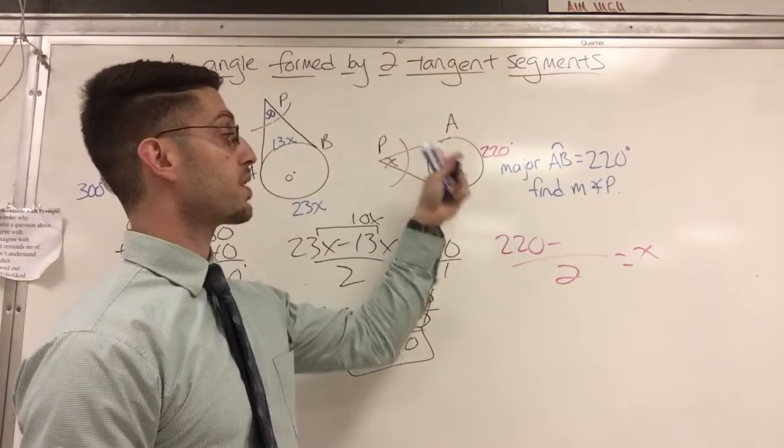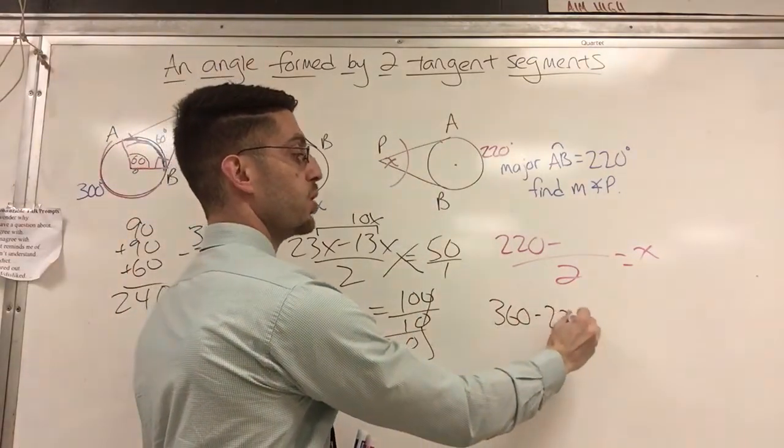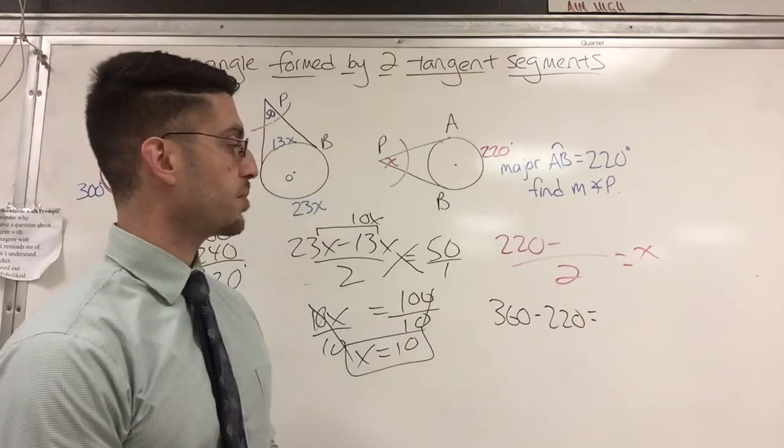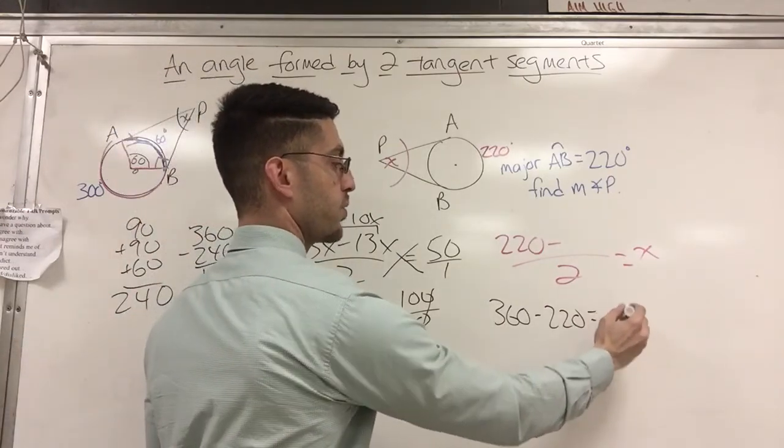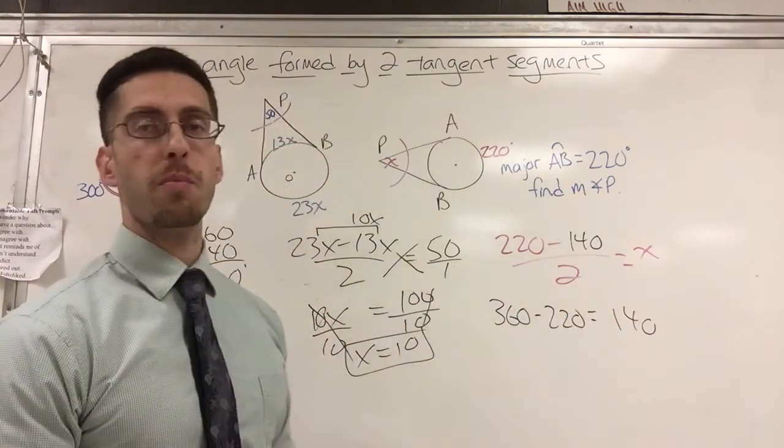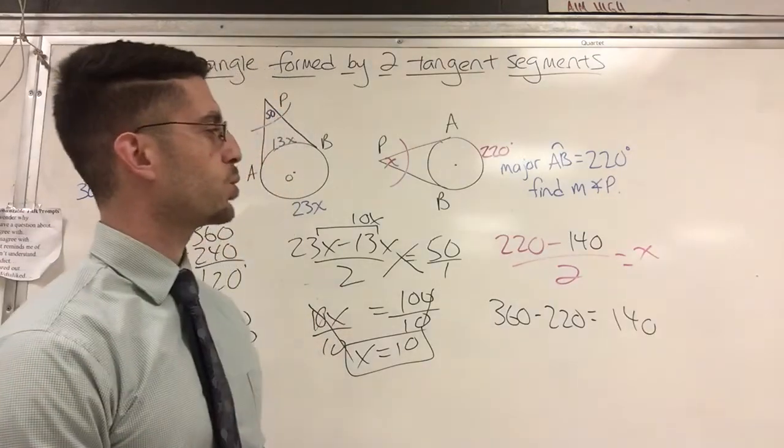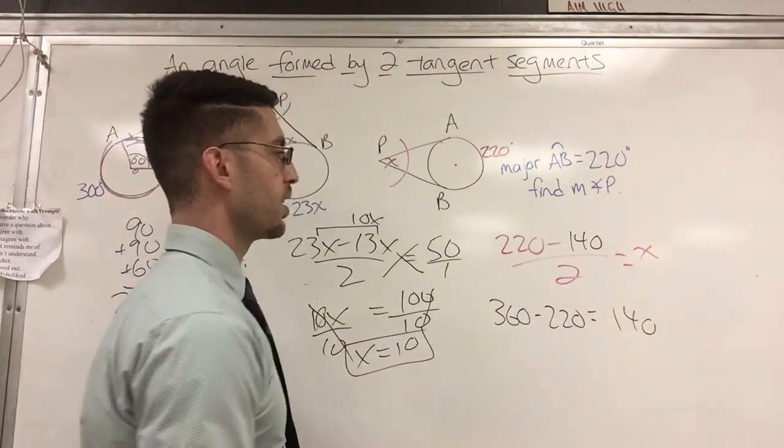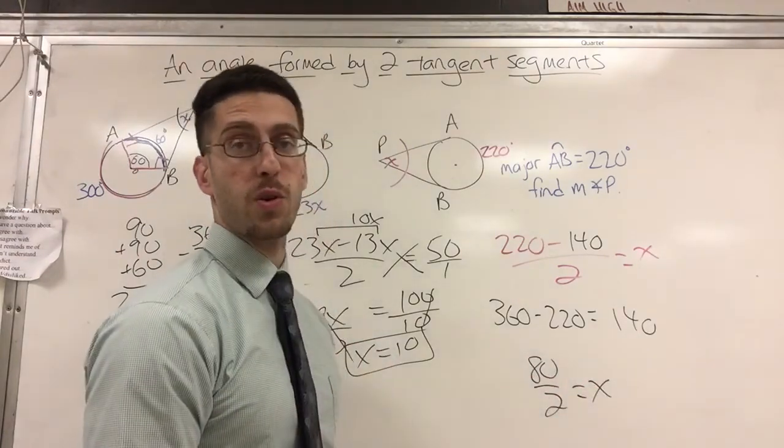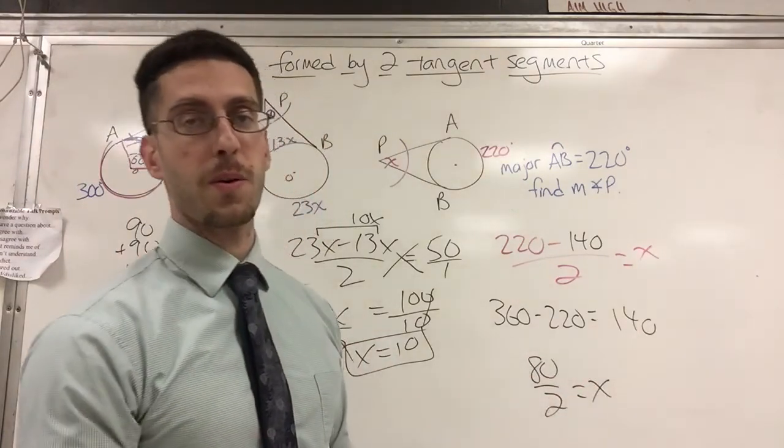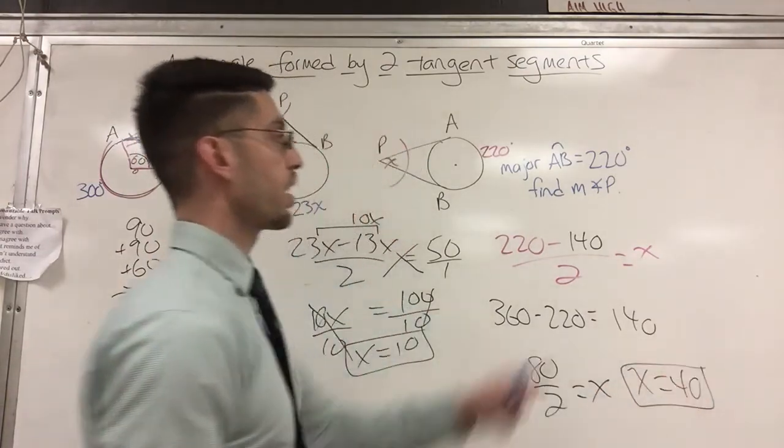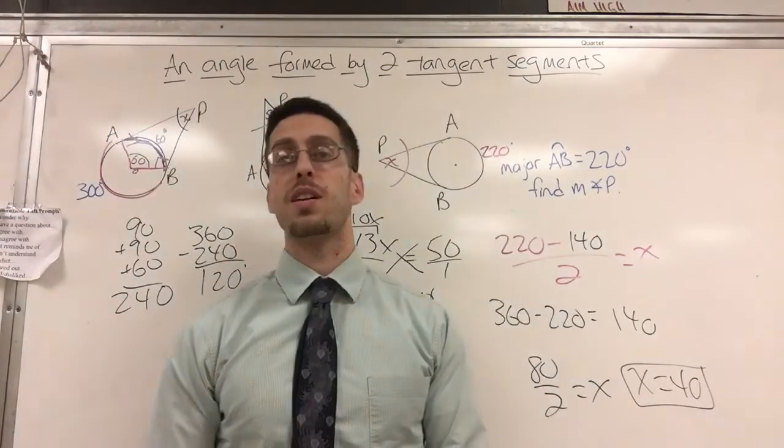So that's 360 minus 220. That's going to give me my minor arc. 360 minus 220 is 140. So there's the 140. 220 minus 140. What's that? 220 minus 140. 80 divided by 2 equals x. Therefore, x equals what? 40. And therefore, your measure of angle P is also 40.